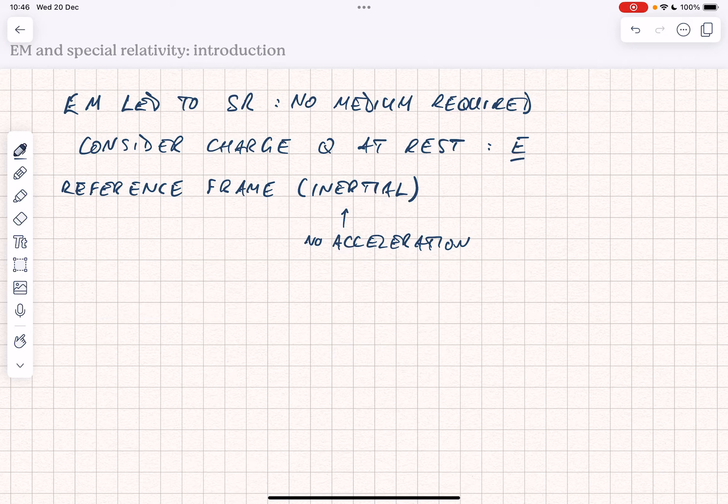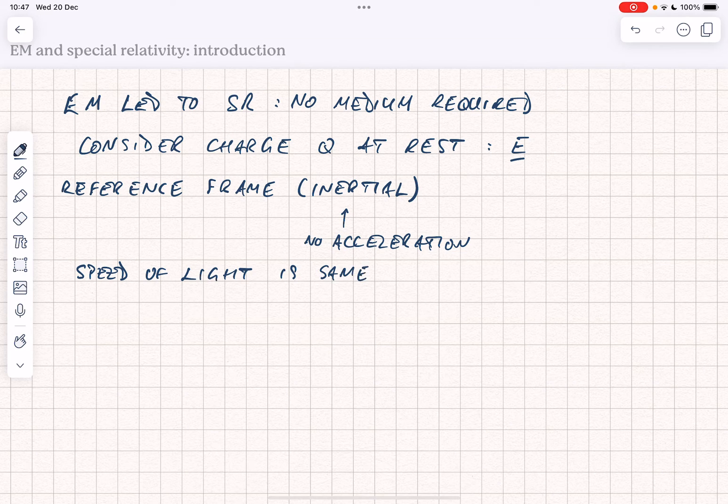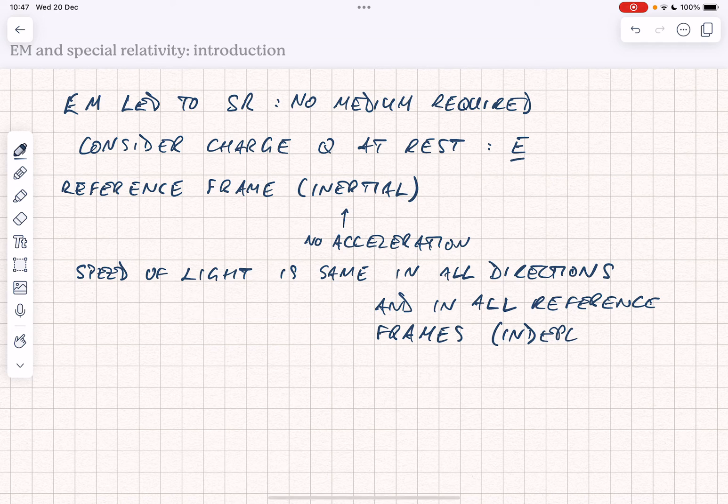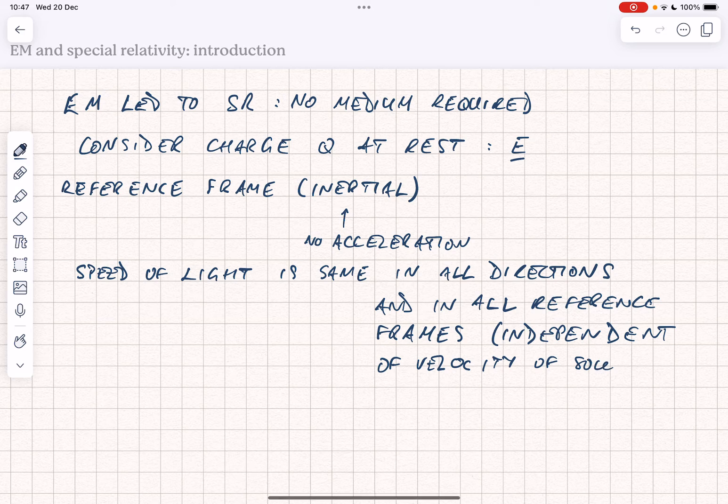What we find is the following, is that the speed of light, if you make measurements carefully, the speed of light is the same in all directions, that's an important point, because it means there's no medium, and in all reference frames. And a corollary of that is it is also independent of the velocity of the source. And that's quite a remarkable statement, quite a remarkable discovery that's been confirmed over many, many years.